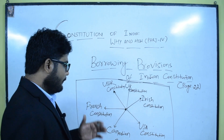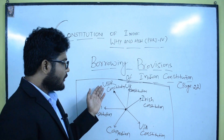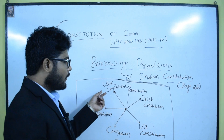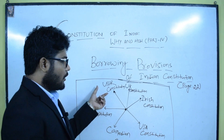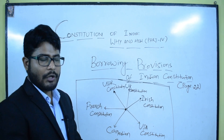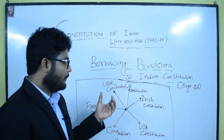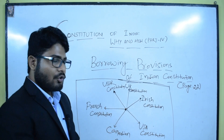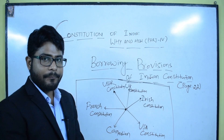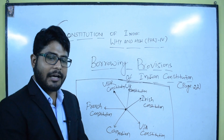From the French Constitution, we borrowed ideologies like liberty, fraternity, and equality. The last is the USSR Constitution — from it we borrowed fundamental duties and the concept of the five-year plan. These things are borrowed from the USSR Constitution.